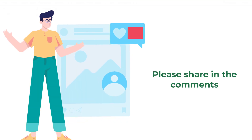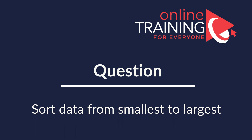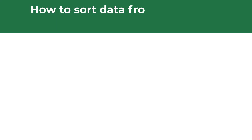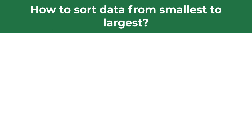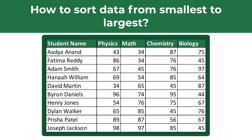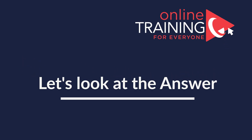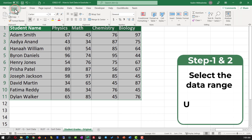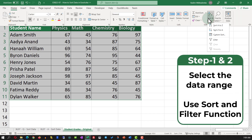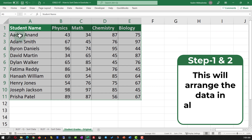Do you know any other solutions? Please make sure to share them in comments. A lot of times you might get a question on how to sort data in Excel from smallest to largest. For example, you might be presented with the data set which shows student names and their grades on different subjects — physics, math, chemistry, and biology — and we need to sort this data set based on the student names. To accomplish this, select the data set and in the Home tab navigate to Sort and Filter and select Sort A to Z, which rearranges the data in alphabetical order based on the student name.